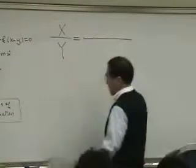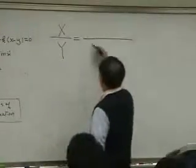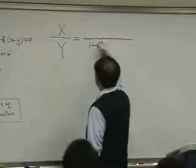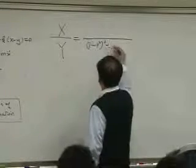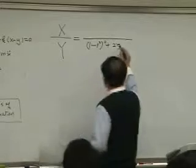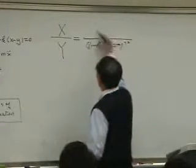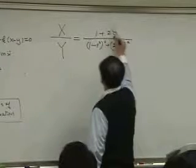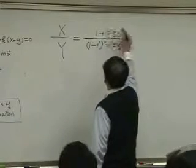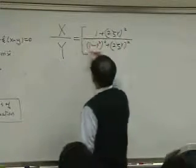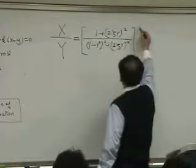This is (1 minus R squared) plus (2 Zeta R) squared. And then, (1 plus 2 Zeta R squared). And that has to be square root.